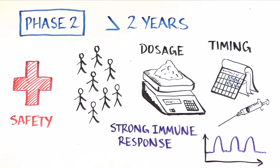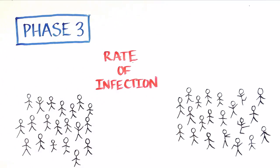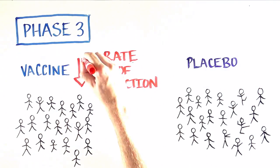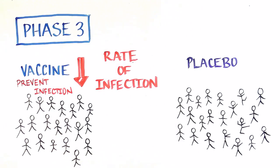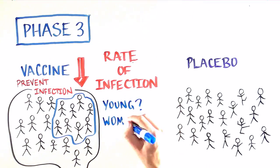Promising vaccines that are safe and generate a strong immune response move into phase 3 trials. These are the largest trials and compare the rate of infection in the vaccine and placebo groups. This will tell us whether the vaccine is able to prevent infection and, if so, if it is effective in all of the volunteers or only a subgroup, like younger volunteers or women.